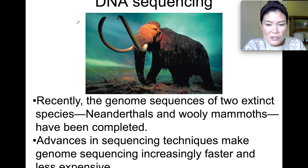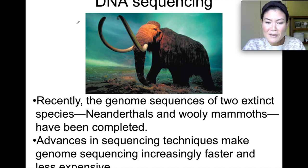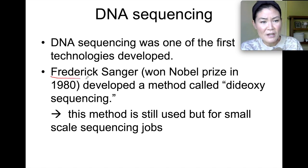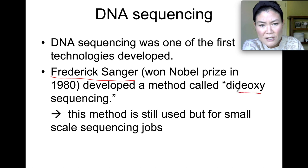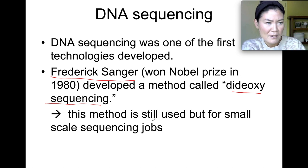Back in the 1970s, a scientist named Frederick Sanger was the first to develop an excellent sequencing method called the dideoxy sequencing method. This method is still used today but it's really only used for small-scale or small-batch sequencing because it takes a long time. What made his experiment unique is that he used dideoxynucleotides — ddATP, ddCTP, ddTTP, and ddGTP.